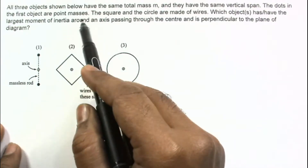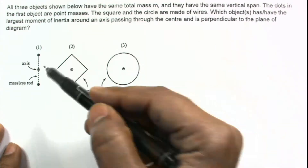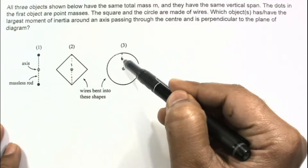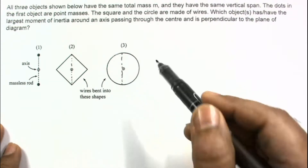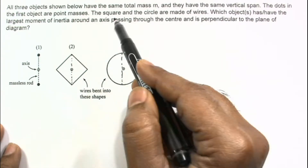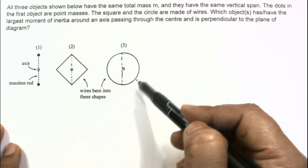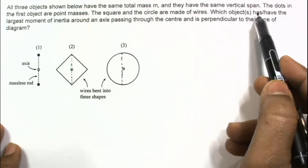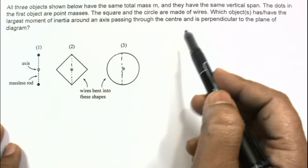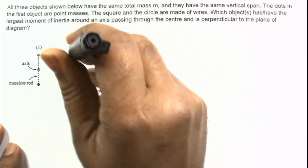In the question, all three objects have the same total mass and the same vertical span — meaning this distance, this distance, and this distance. The dots in the first object are point masses. The square and the circle are made of wires. Which object or objects has the largest moment of inertia around an axis passing through the center and perpendicular to the plane of the diagram?